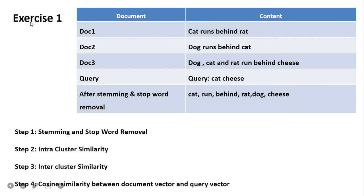Now let us start the exercise. Three documents are given: (1) 'cat runs behind rat', (2) 'dog runs behind cat', (3) 'dog, cat, and rat runs behind cheese'. The query is 'cat cheese'. The four steps to follow are: stemming and stop word removal, intra-cluster similarity, inter-cluster similarity, and cosine similarity between document and query vectors.